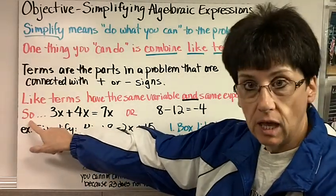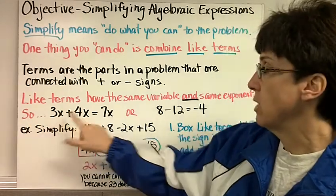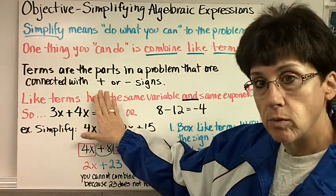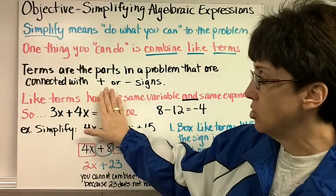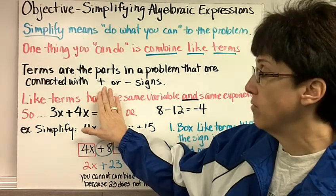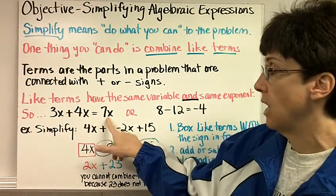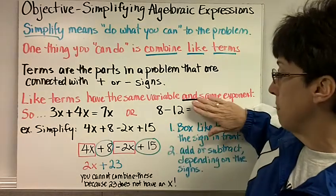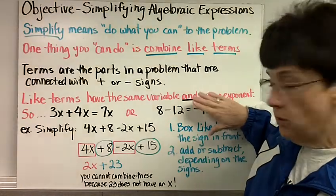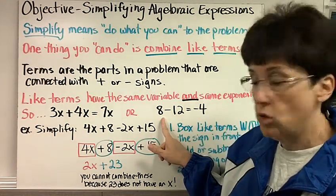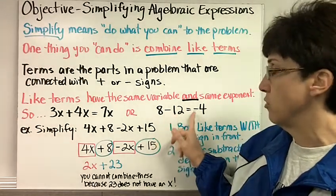So if we had an expression that said 3x plus 4x, we could say they both have the same variable x, and they don't have an exponent, so I can combine them. So if I have 3 x's and I get 4 more x's, I get 7x. Or, this is something you've been doing for a long time, x minus 12 negative 4. x and 12 are both regular numbers, they're both constants, so we can combine them, which you've been doing forever.